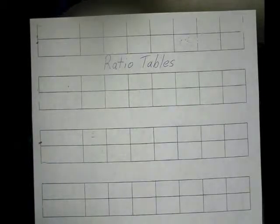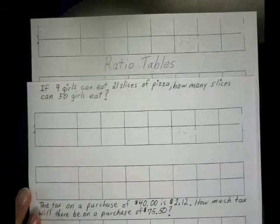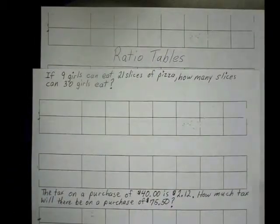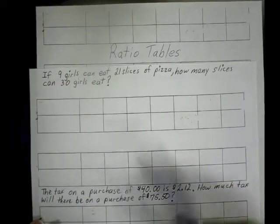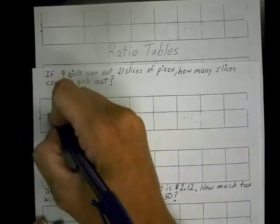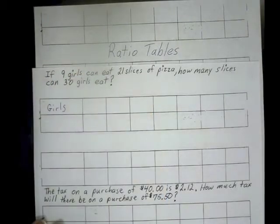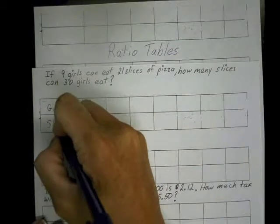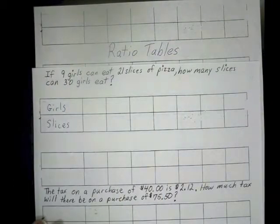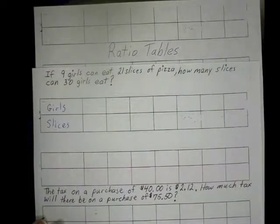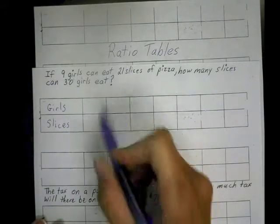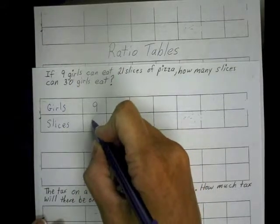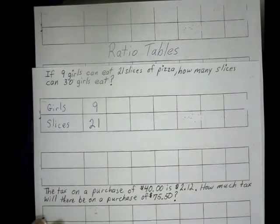Let's look at an example. If 9 girls eat 21 slices of pizza, how many slices can 30 girls eat? First, we identify the units in the problem: we have our girls and we have the slices of pizza. Now I need to identify the ratio that is a complete ratio. Here we have 9 girls compared to 21 slices, so I'm going to use one set of boxes to show that ratio.